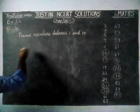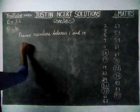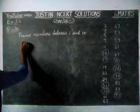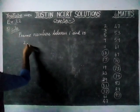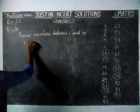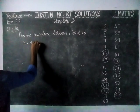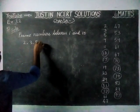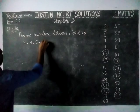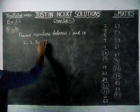We are going to write all the prime numbers between 1 and 10. The prime numbers are: 2, 3, 5, 7.